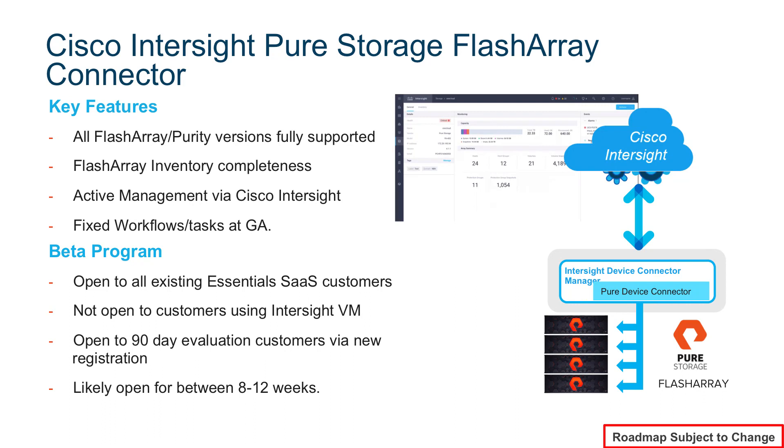There's also the capability to configure workflows and tasks — we'll talk about that more in a second. As part of the delivery of the Flash Array integration into Intersight, we've actually built an Intersight device connector. The customer connects to Intersight using the device connector, which is downloaded and installed as a virtual machine on their infrastructure. There's a single 443 SSL connection back into Intersight, which simplifies the security configuration and connectivity. For each of the Flash Array products the customer has on-premises, a Pure device connector is configured, including the username, password, and IP address of each Flash Array. The Flash Array connector is about to be available in a beta program, open to all customers subscribed to the Essentials package of Intersight. It won't be available for customers using the on-premises version of Intersight packaged as a virtual machine.